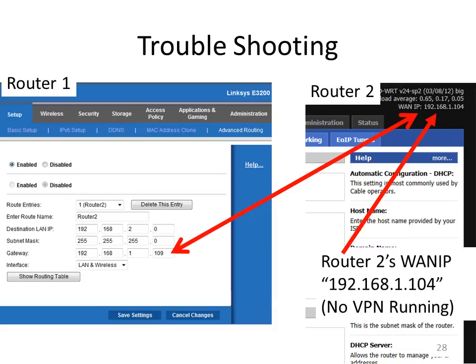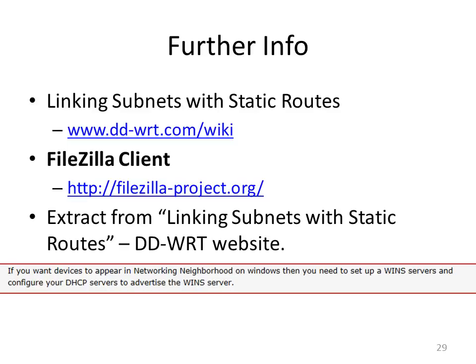This is the troubleshooting section. Pretty much there's only one thing you can get wrong when setting this up: the gateway address on router 1 doesn't match the WAN IP address of router 2. Recall that you get the WAN IP of router 2 by unplugging the power on router 2 and plugging it back in — that's the IP before the VPN is running. If the gateway on router 1 doesn't match the WAN IP of router 2, the connection won't work. Make sure these two numbers are the same.